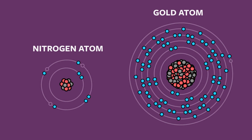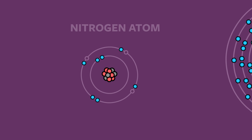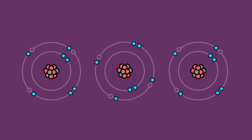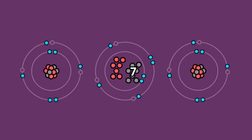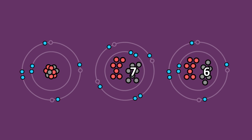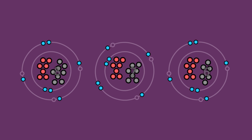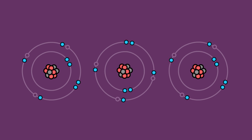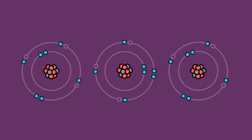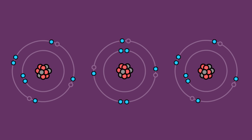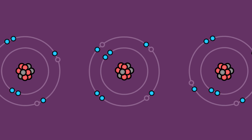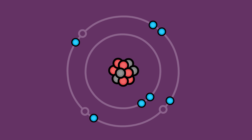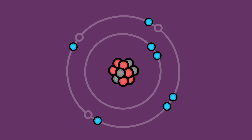The number of neutrons in a particular type of atom might vary between individuals. For example, while most nitrogen atoms have 7 neutrons, some have just 6, while others have 8. Changing the number of neutrons inside of an atom won't really do much to change its chemical properties. Instead, it will often just make the atom slightly heavier, slightly lighter, or sometimes it will make the atom unstable.